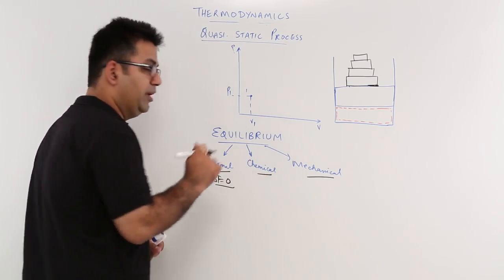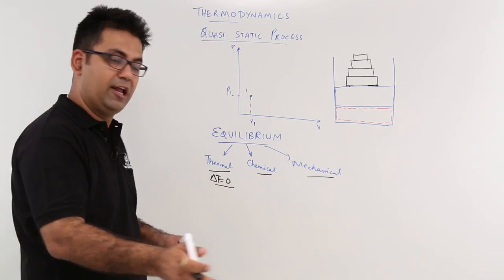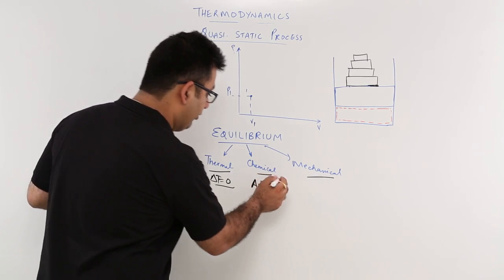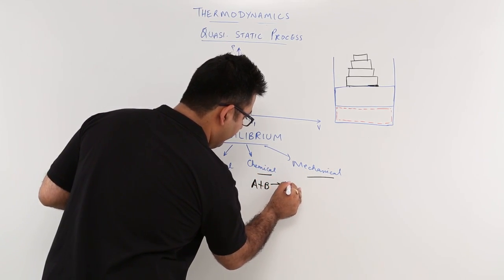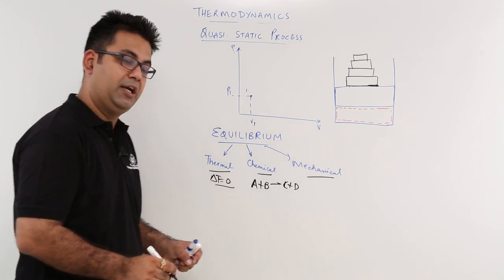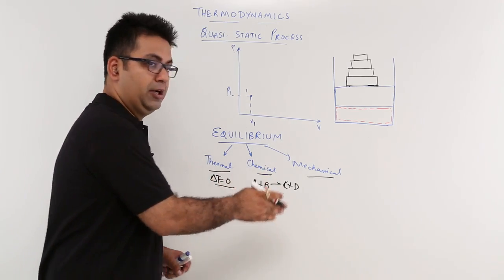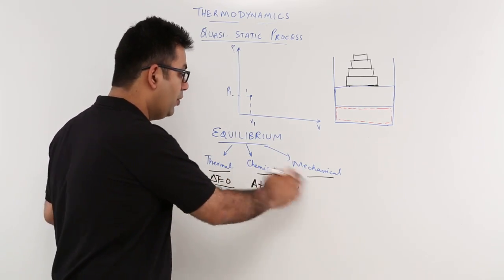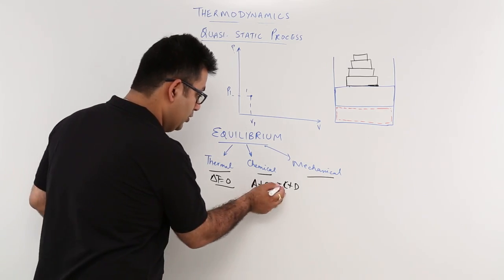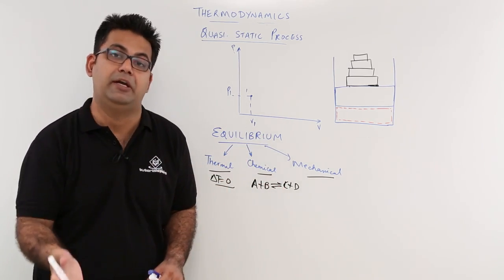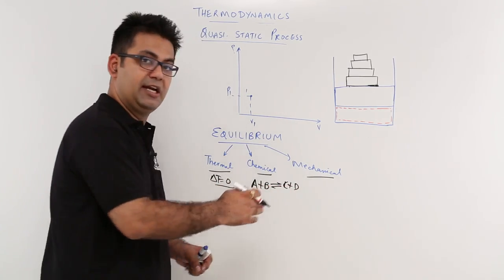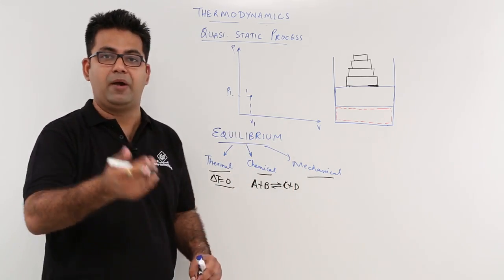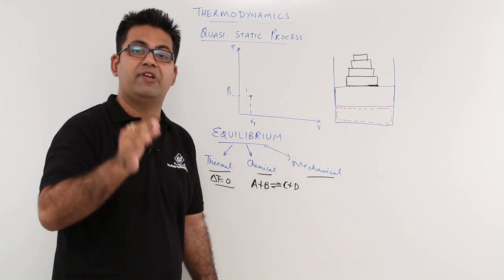Chemical equilibrium means: for a chemical reaction to take place, you have a set of reactants and from these reactants you get a set of products. From reactants to products is the forward reaction. The rate at which this forward reaction takes place equals the rate at which the backward reaction takes place — that is, from products back to reactants. When the rate of the forward reaction becomes equal to the rate of the backward reaction, it becomes a case of chemical equilibrium.